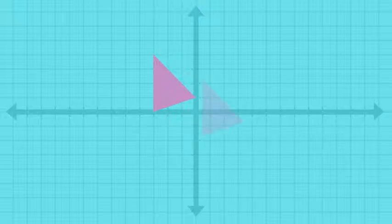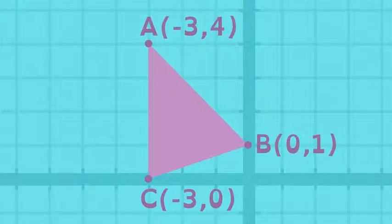Say we want to move this triangle to another location on a coordinate plane. First, we name the ordered pair for each of the shape's vertices.